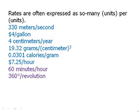Rates are often expressed as so many units per units. So for example, all of these are rates. Many of these are drawn from science. The last two are special kinds: 60 minutes per hour or 360 degrees per revolution. These are examples of unit conversions. So these would be examples of things you would actually be expected to know. The other ones you would not be expected to know. But you would be expected to know that there are 60 minutes in an hour and you can write this as a ratio.